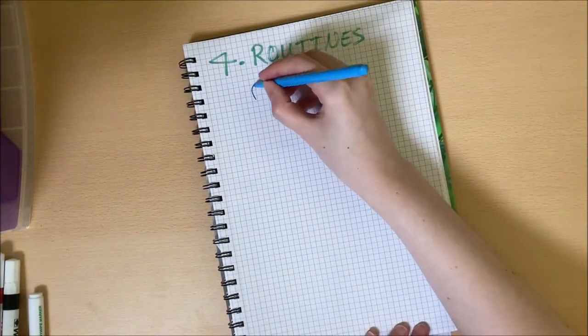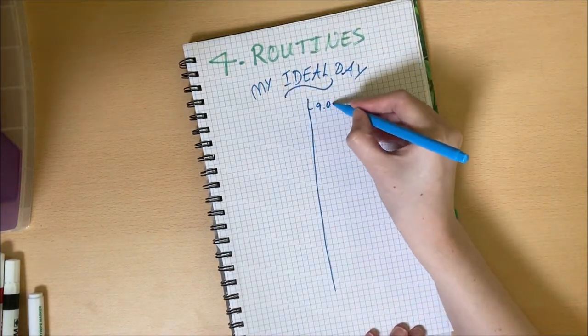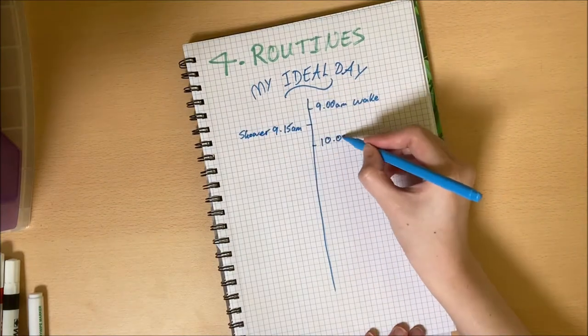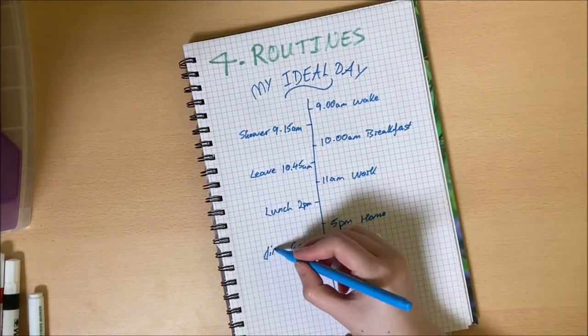Idea number four is to write down your routine. This could be your ideal day, your morning routine, your evening routine or even just what's happening tomorrow. It's a good way to keep track of what needs to be done and when.